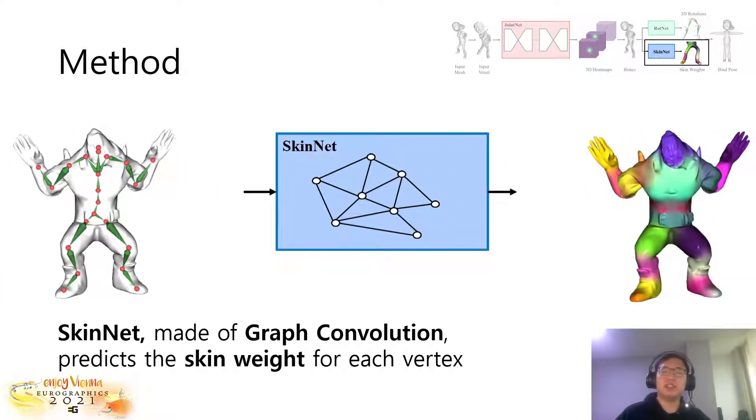After predicting the joint position, we compute the volumetric geodesic distance between predicted joints and vertices. We stack them as a feature to the original mesh for the input of the SkinNet. The SkinNet that runs graph convolution to regress the skin weights as a distribution over joints. The network is then trained using soft cross-entropy loss. For the final output, we filter up to three most relevant bones over the threshold of 0.2 and normalize them so that the skin weights for each vertex sum up to one.